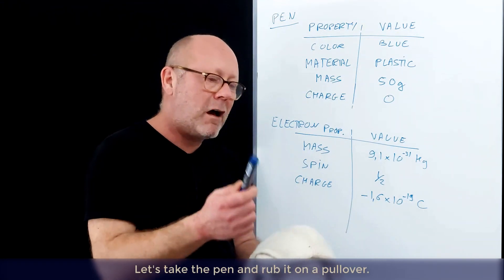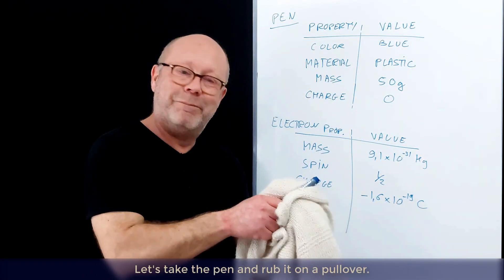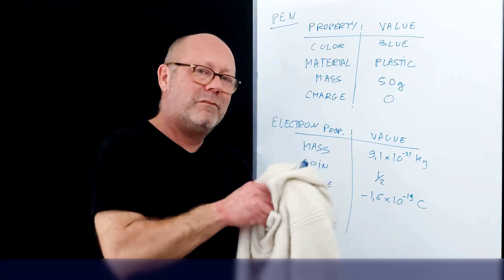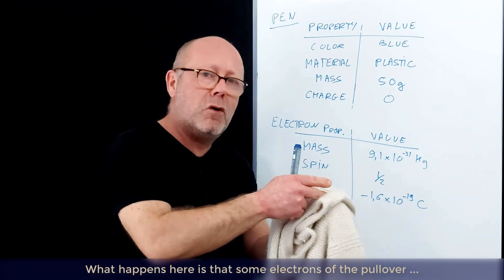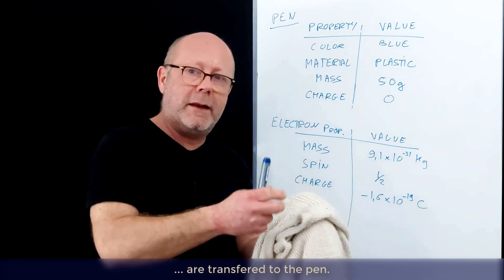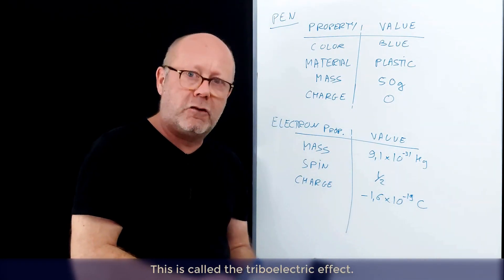Let's take the pen there and rub it onto a pullover. What happens here is that some electrons of the pullover are transferred to the pen. This is called the triboelectric effect.